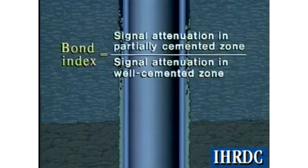The bond index can help in this regard. The bond index is defined as the signal attenuation in the zone of interest, divided by the attenuation in a zone with known good cementation.